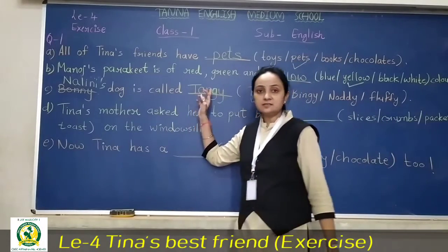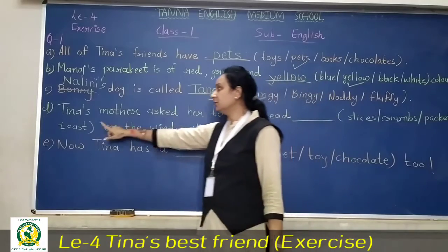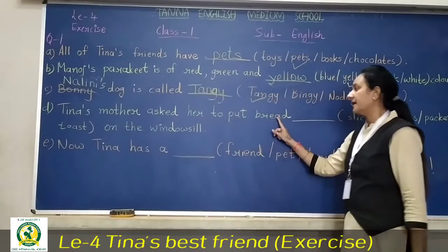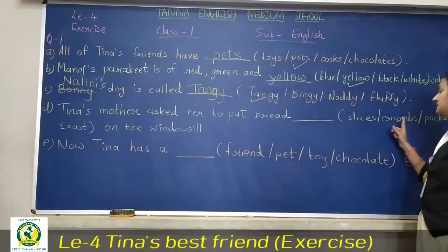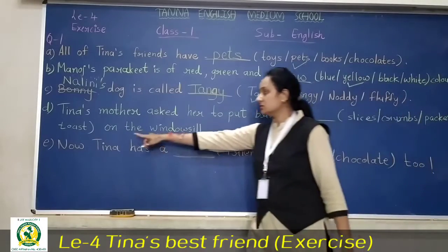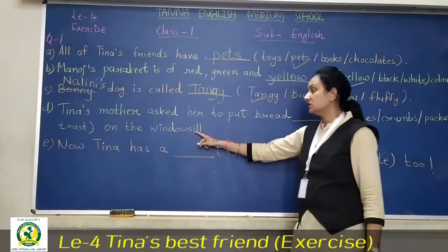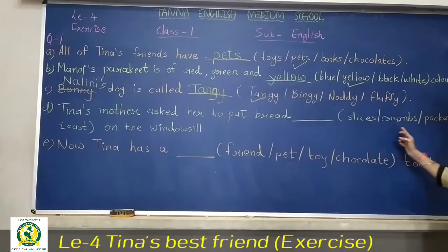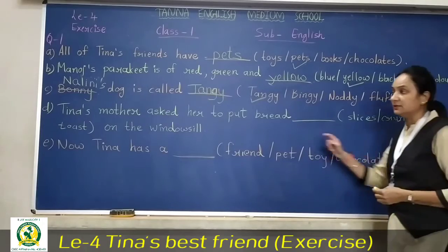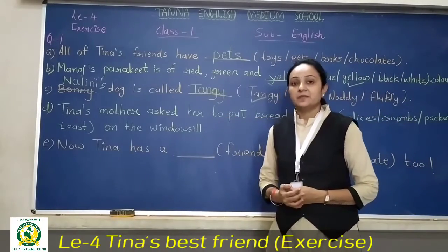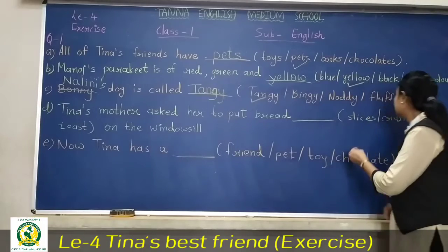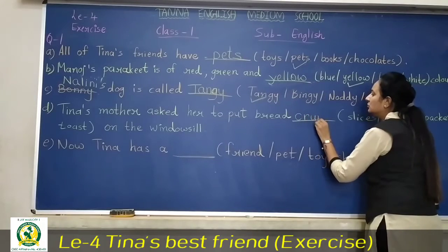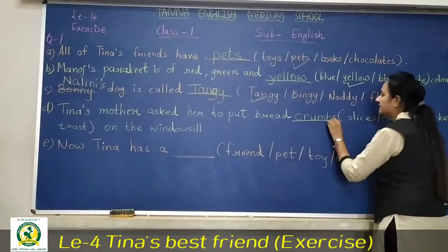Now the fourth one. Tina's mother asks her to put bread dash slices, crumbs, packet, or toast on the windows. Tina ki maa darake — she asked to put bread crumbs. Crumbs rakhne ko kaha. So we will mark over here and write crumbs. C-R-U-M-B-S, crumbs.